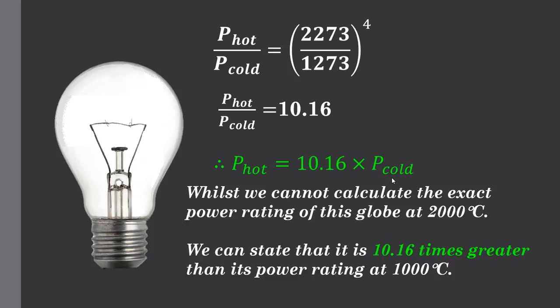So, whilst we cannot calculate the exact power rating of this globe at 2000°C, we can state that it is 10.16 times greater than its power rating at 1000°C. Had it been 2, we'd say the hot is double. Had it been a half, we could say that the hot is only a half that of cold. Although that would make no sense because clearly with a hotter temperature we would get a higher power rating.